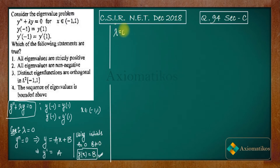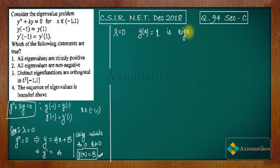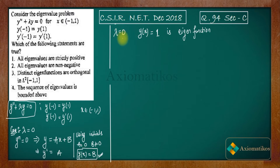Corresponding to λ = 0 as the eigenvalue, we get y(x) = b, a constant. Choosing b = 1, the eigenfunction is y(x) = 1, which is a non-trivial solution.